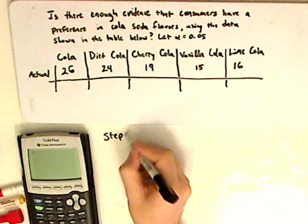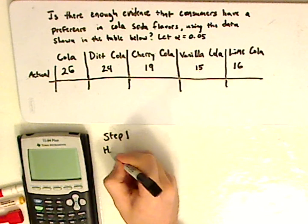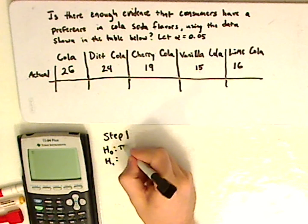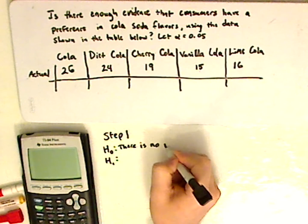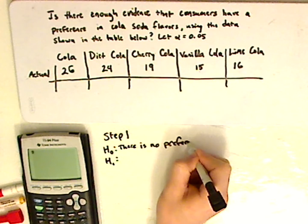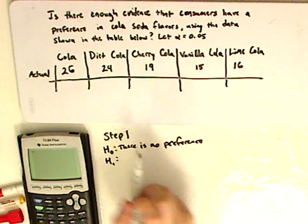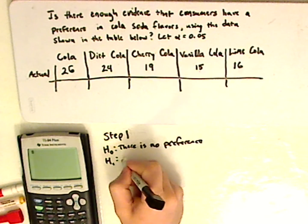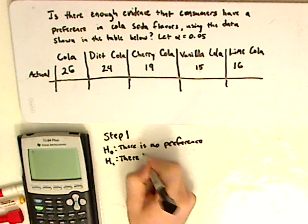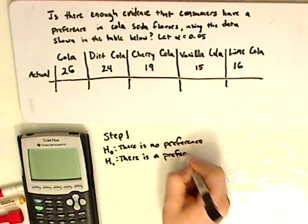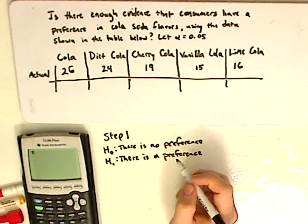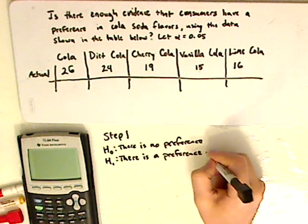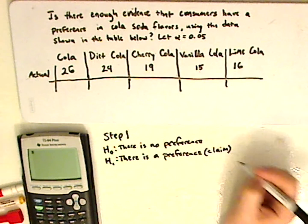Alright, step number one is you want to state the hypotheses. The null hypothesis is there is no preference in cola soda flavors. The alternative hypothesis is the opposite — there is a preference. You would also want to state where your claim is. The question asks is there enough evidence that consumers have a preference, so the claim would be the alternative hypothesis.